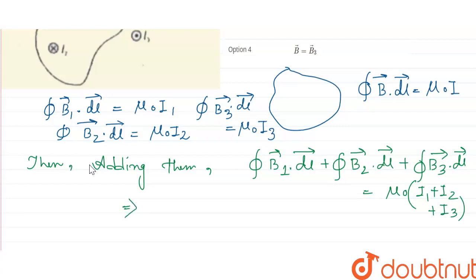So now if we take common, then B1 vector plus B2 vector plus B3 vector dot dl vector—and the total current will be i, so that will be mu0 i. And mu0 i is equal to, it's already mentioned in the question that mu0 i equals B vector dot dl vector.